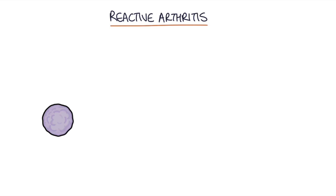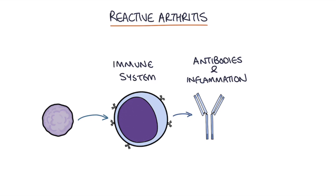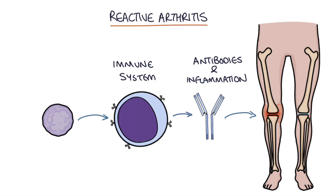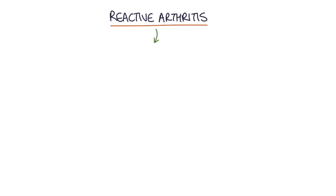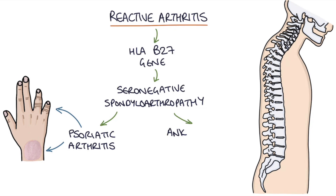As far as pathophysiology is concerned, the immune system is responding to the recent infection — whether gastroenteritis, sexually transmitted infection, or another infection — and the immune response also causes antibodies or inflammation that affects joints. There's a link with the HLA-B27 gene and it's considered part of the seronegative spondyloarthropathy group, which also includes psoriatic arthritis and ankylosing spondylitis.